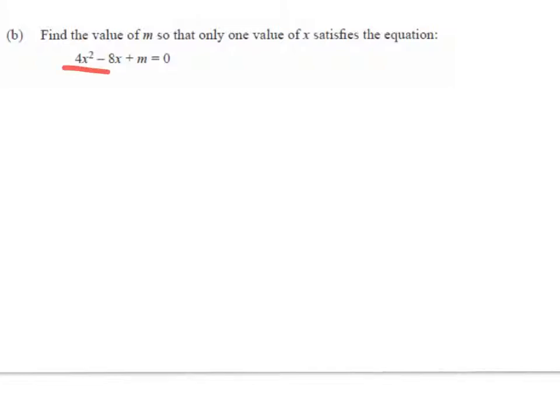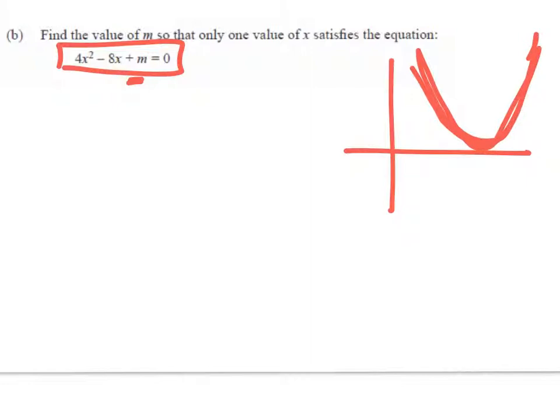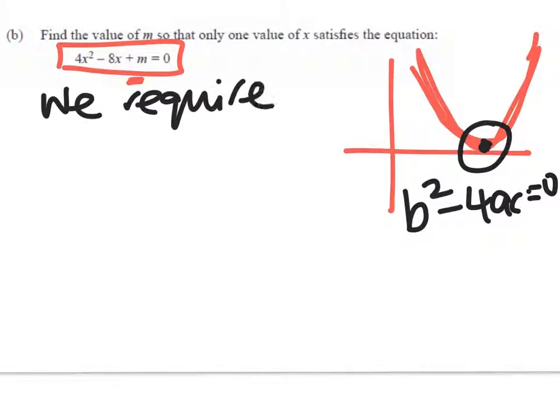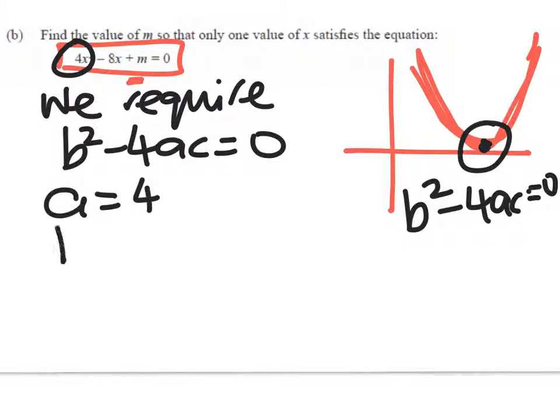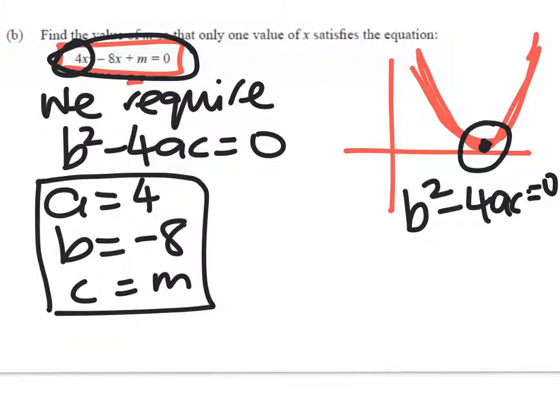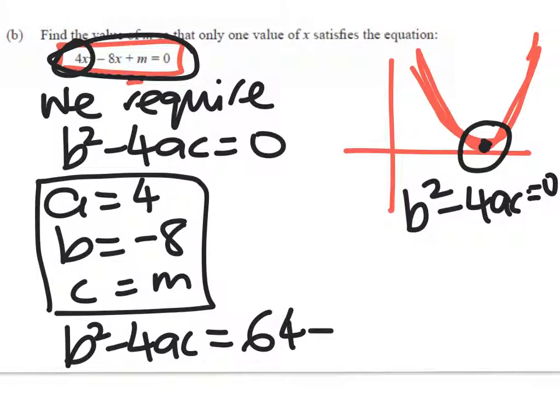This question is looking for a value of m that will give us only one value of x that makes this true. So what this is talking about is when will my quadratic have one root instead of two roots or none. So we're working with a problem where we've got the discriminant equaling 0. So we should write that we need b squared minus 4ac equals 0. a is 4, b is negative 8 and c is m. So we're just taking the coefficients from the equation.